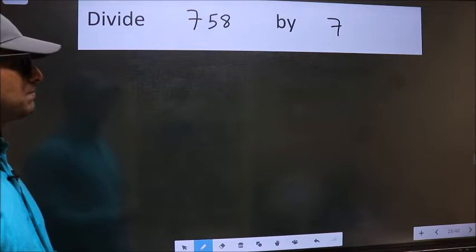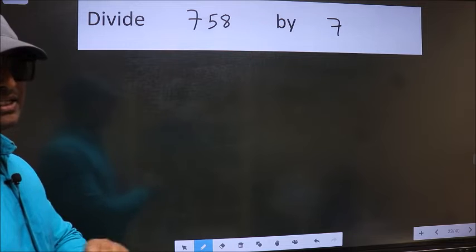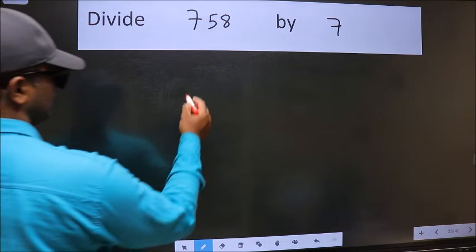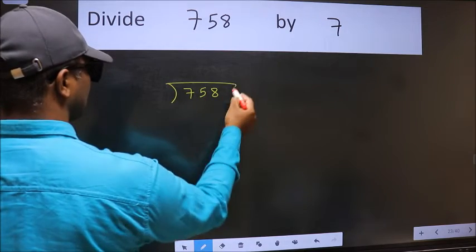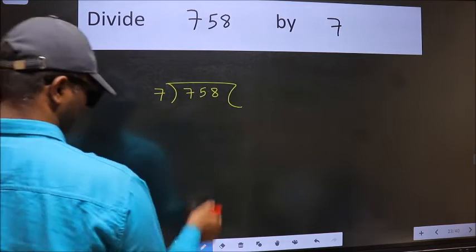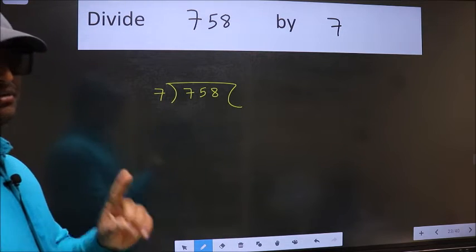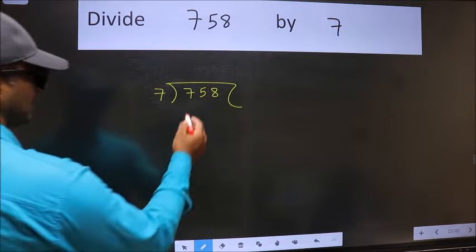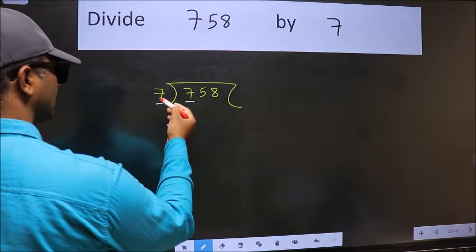To divide 758 by 7, we frame it this way: 758 here and 7 here. This is step one. Next, we have 7 and here 7. When do we get 7 and 7? Seven table once seven. Now we should subtract, we get zero.